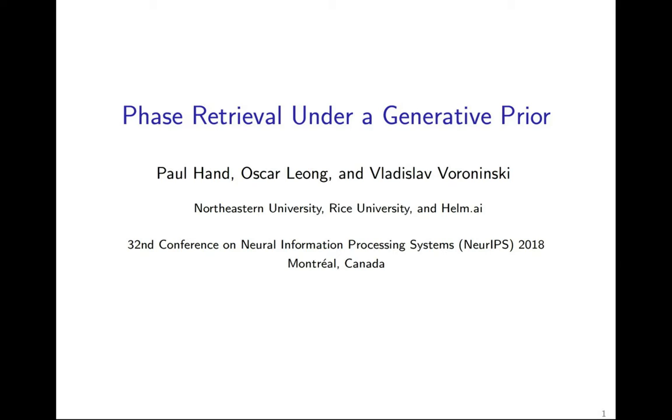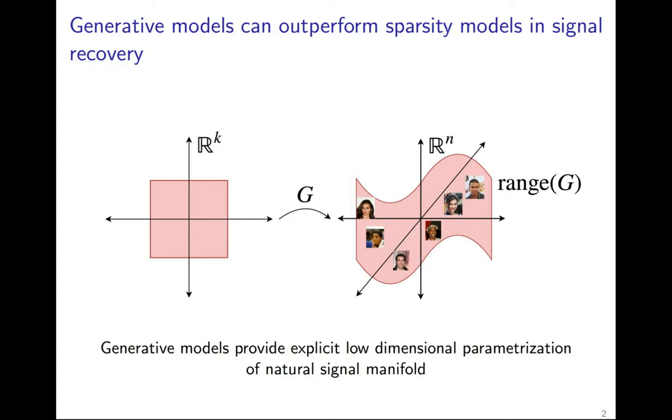For instance, generative models are specifically trained so that their range approximates the distribution of a certain class of signals. The variety of signal classes generative models have been trained to output, an example being images of celebrities.